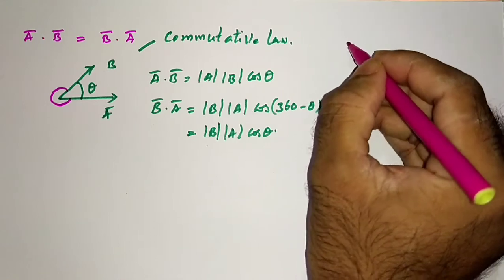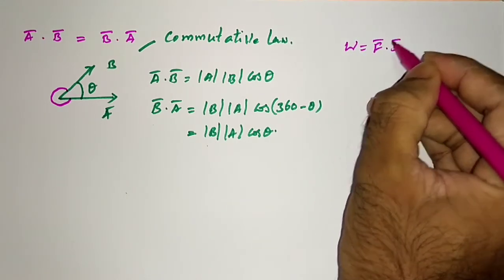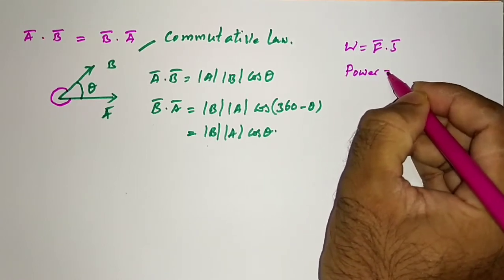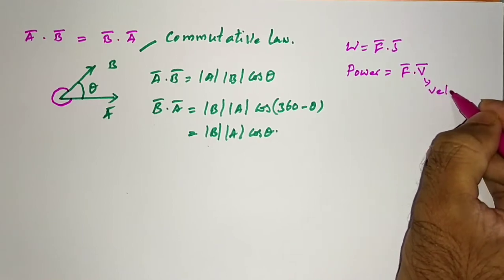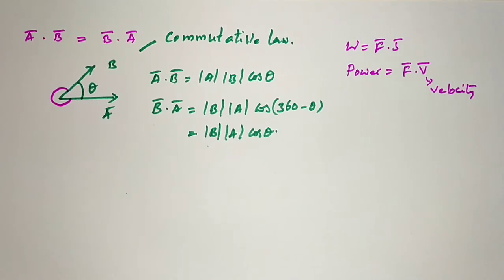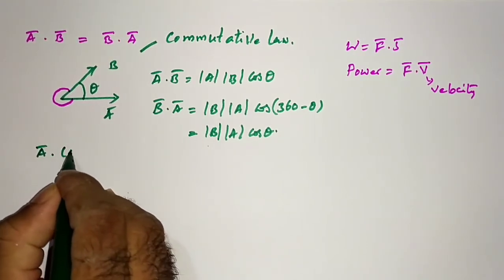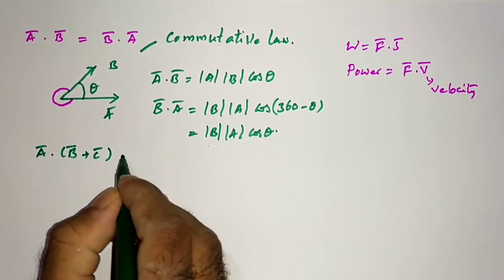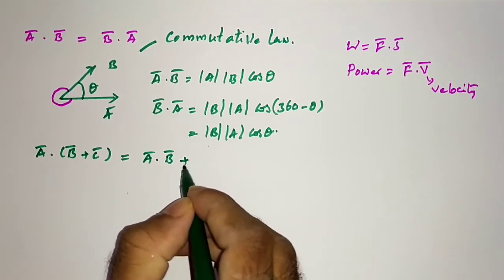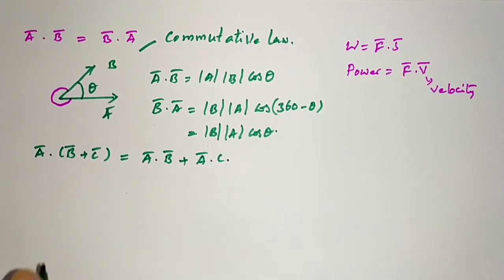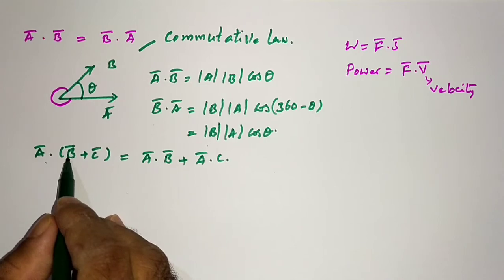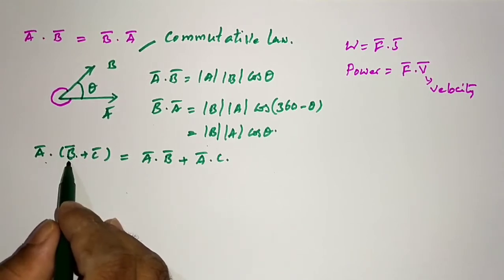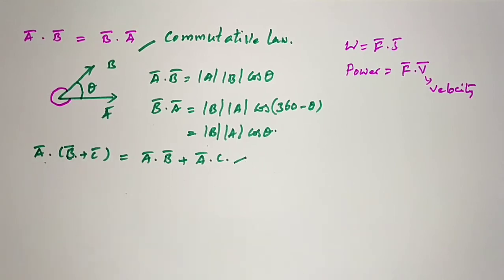Examples of scalar products include work (W = F·S) and power (P = F·v), where force and velocity are both vectors but their dot product gives the scalar power. The dot product also obeys the distributive law: A·(B + C) = A·B + A·C.